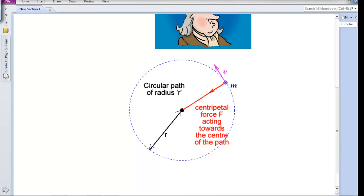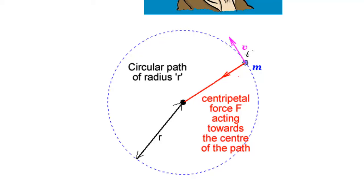There are many physical quantities included in any circular motion. First, the velocity — we call it Vt because it is tangent to the circle, so we call it tangential velocity. The second value is the mass of the object in kilograms. And there are two physical quantities directed towards the center: the first is Ac, the centripetal acceleration, and the second is Fc, the centripetal force.